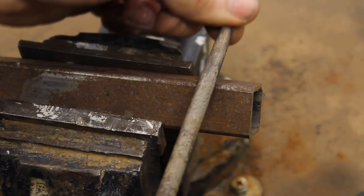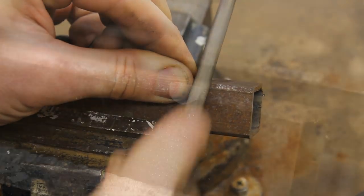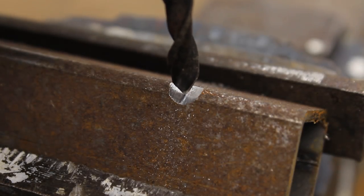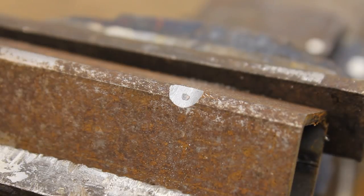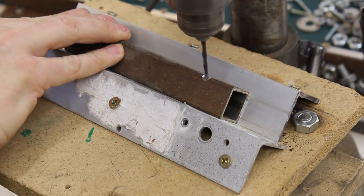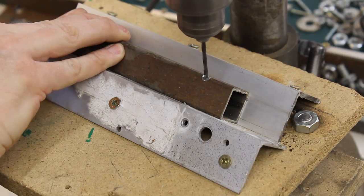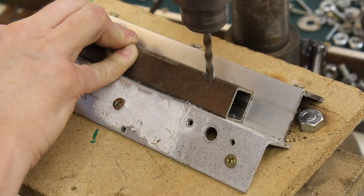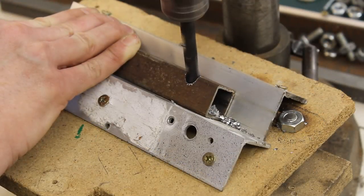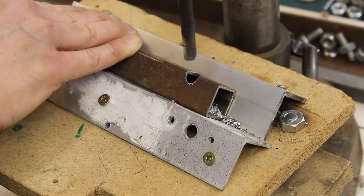The edge of the iron square tube is filed and the place for the drill hole is marked with a center punch. The drilling is done in three steps, starting with a 3mm drill, then 6mm, and finally 10mm.